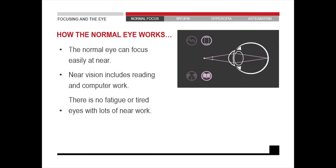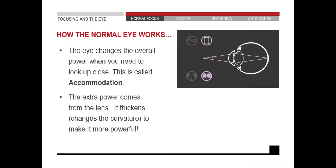If you look at near vision for a normal eye, the normal eye can focus clearly at near objects. Near vision refers to reading or looking at a computer screen — anything from 40 centimeters to about 60 centimeters and closer. The normal eye will not get tired when looking at anything near.